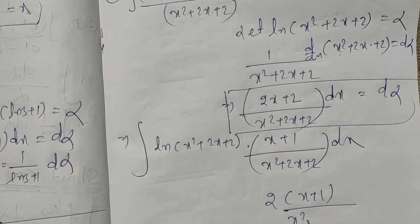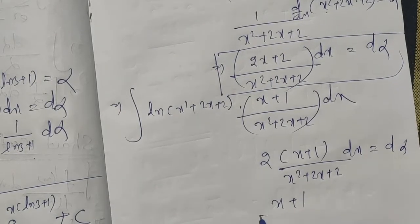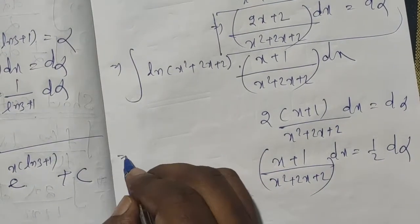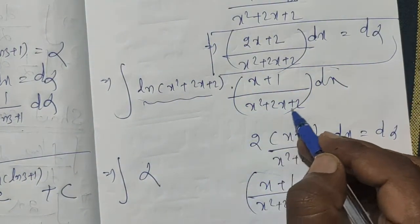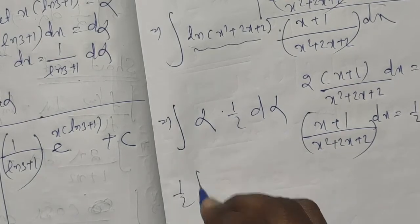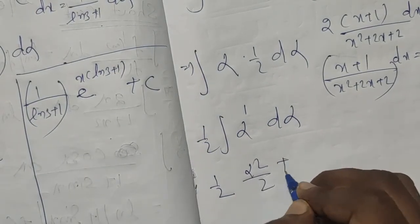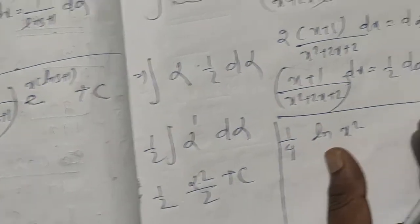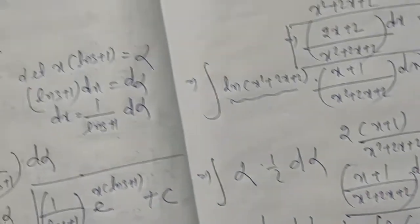The derivative of x squared plus 2x plus 2 is 2x plus 2, so (x plus 1) by (x squared plus 2x plus 2) dx equals 1 by 2 d alpha. Substituting, we integrate alpha times 1 by 2 d alpha, giving 1 by 2 times alpha squared plus c, which is 1 by 2 times ln(x squared plus 2x plus 2) squared plus c.